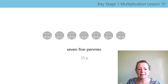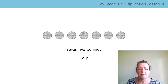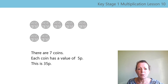Let's count in fives: five, ten, fifteen, twenty, twenty-five, thirty, thirty-five. There are seven five-pennies. Each coin has a value of five-p. This is thirty-five-p altogether. Say the same sentences with me: there are seven coins, each coin has a value of five-p, this is thirty-five-p.